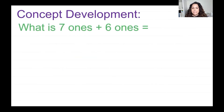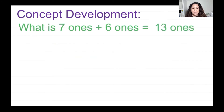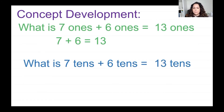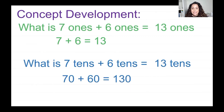Let's try another one. What is seven ones plus six ones? Seven plus six is 13 ones, so seven plus six is equal to 13. Now what if I change it up — what is seven tens plus six tens? That would equal 13 tens. But when I write it in numbers, when I have seven tens I don't just have the number seven, I have the number 70. So it looks like this: 70 plus 60 is equal to 130.